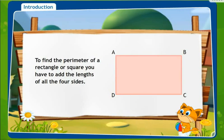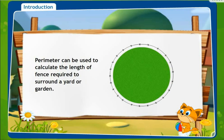Now what we are going to study is the perimeter of a rectangle or a square. If we are supposed to find the perimeter of a rectangle or a square, you have to add the length of all four sides. For example, if we have a rectangle ABCD, it is side AB plus side BC plus side CD plus AD. This gives you the perimeter of rectangle ABCD. Perimeter can be used to calculate the length of the fence required to surround a yard or a garden.